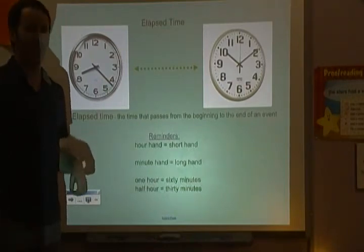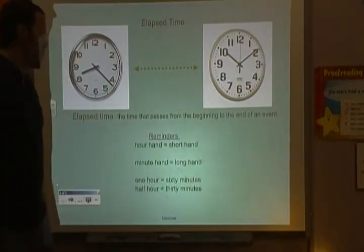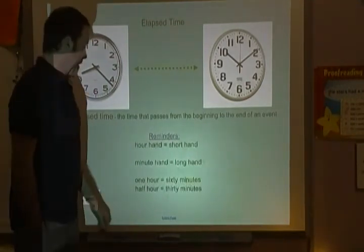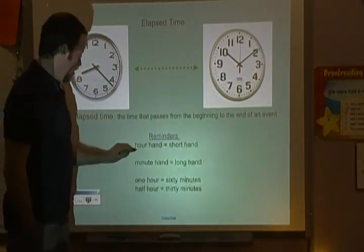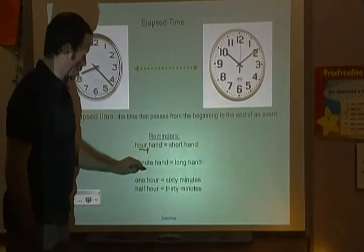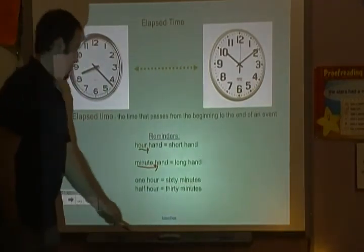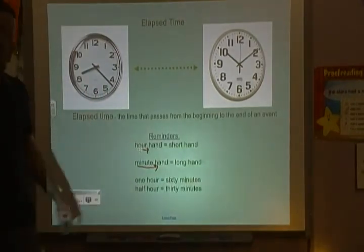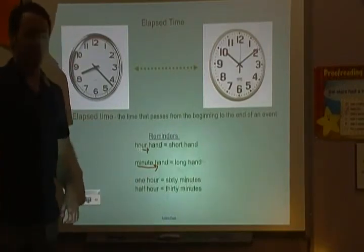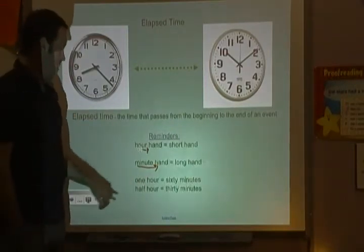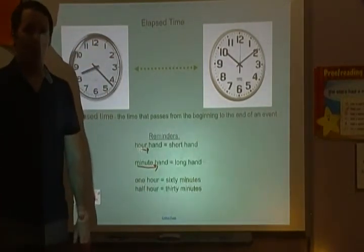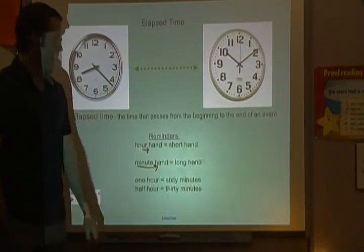Some other vocabulary reminders: the hour hand is the short hand, and the minute hand is the long hand. An easy way to remember that is that 'hour' is a shorter word than 'minute,' so the hour hand is the shorter hand. Also, one hour equals 60 minutes, and a half hour equals 30 minutes. Students, go ahead and pause the video and write any of those reminders down.